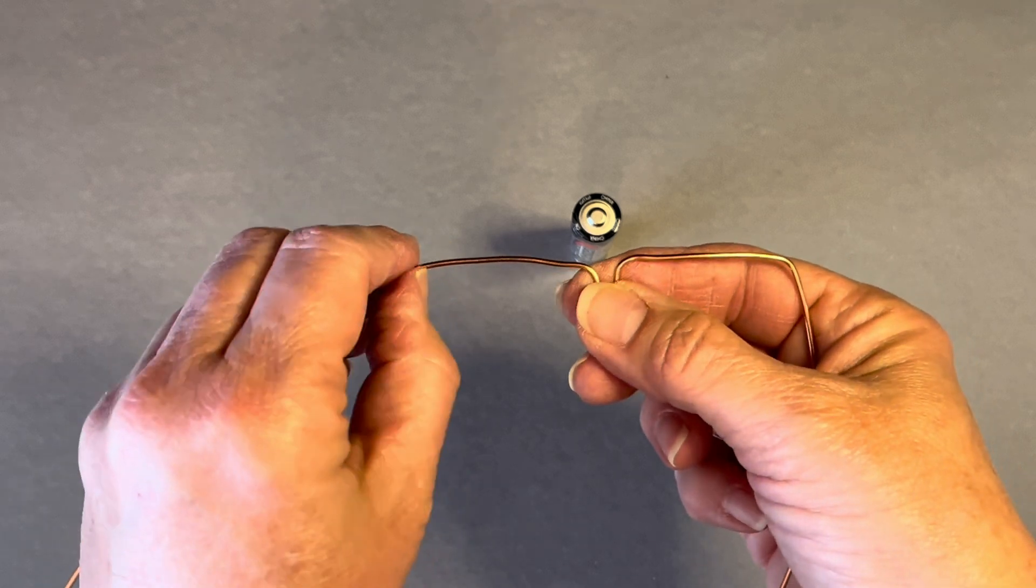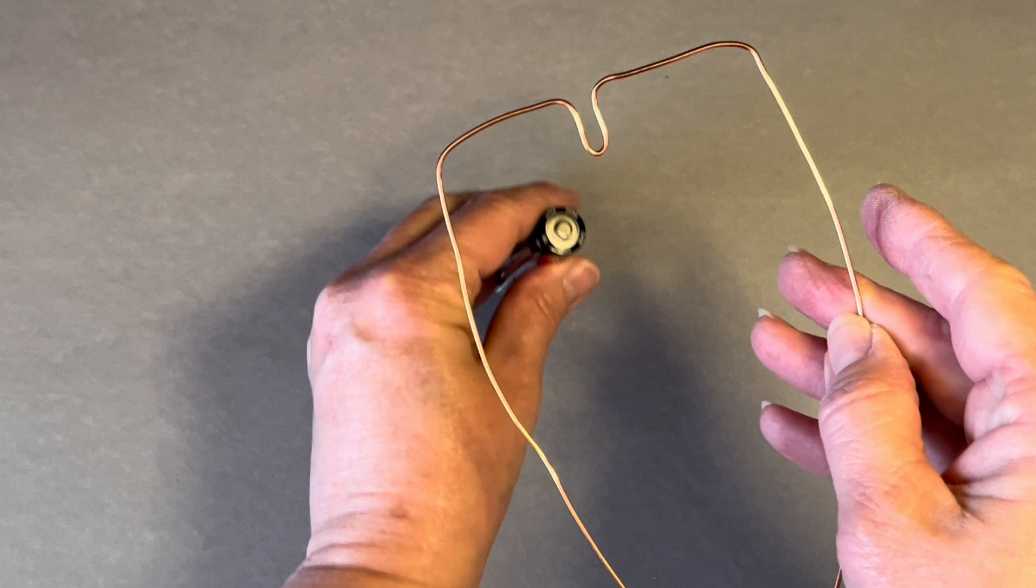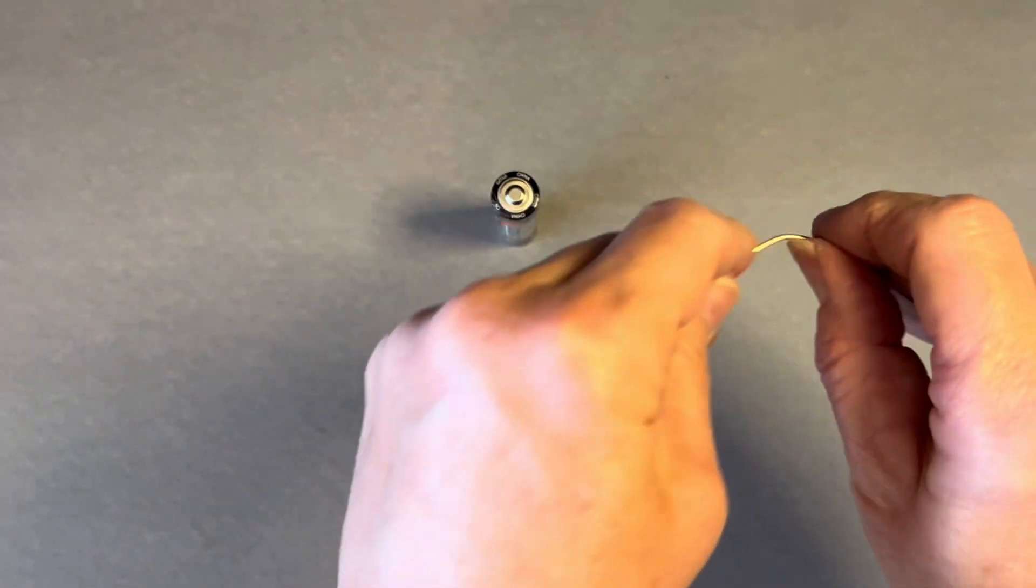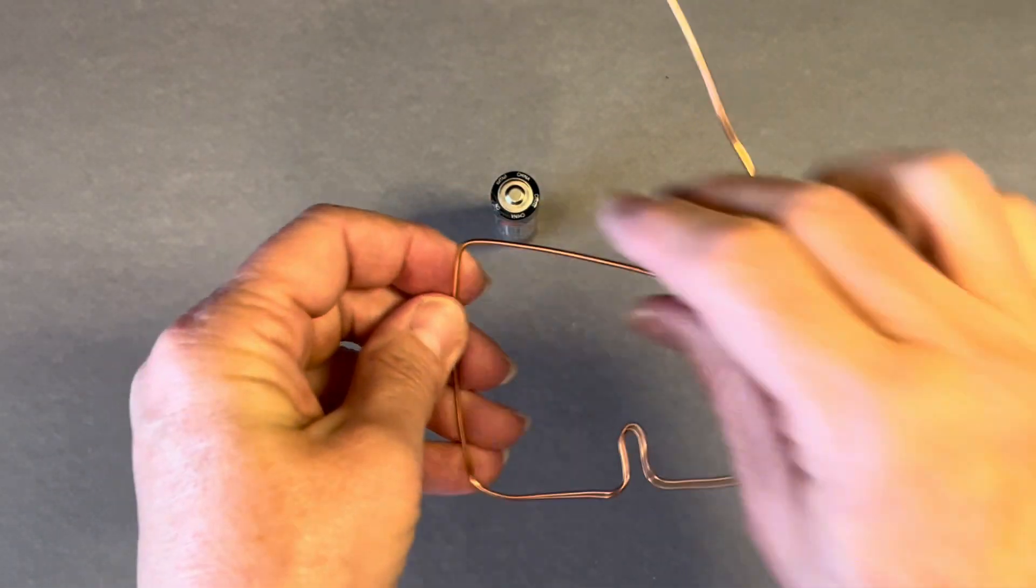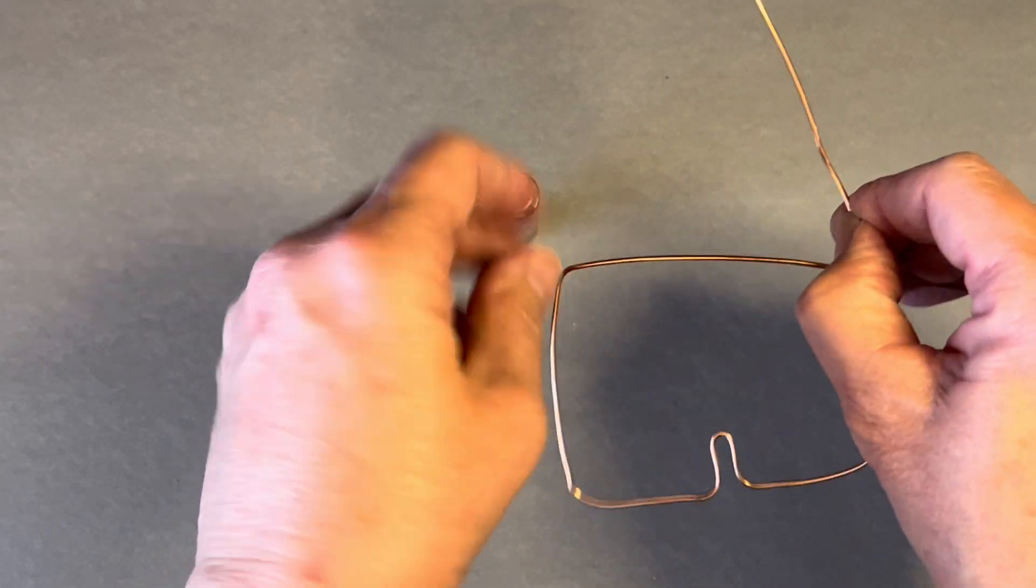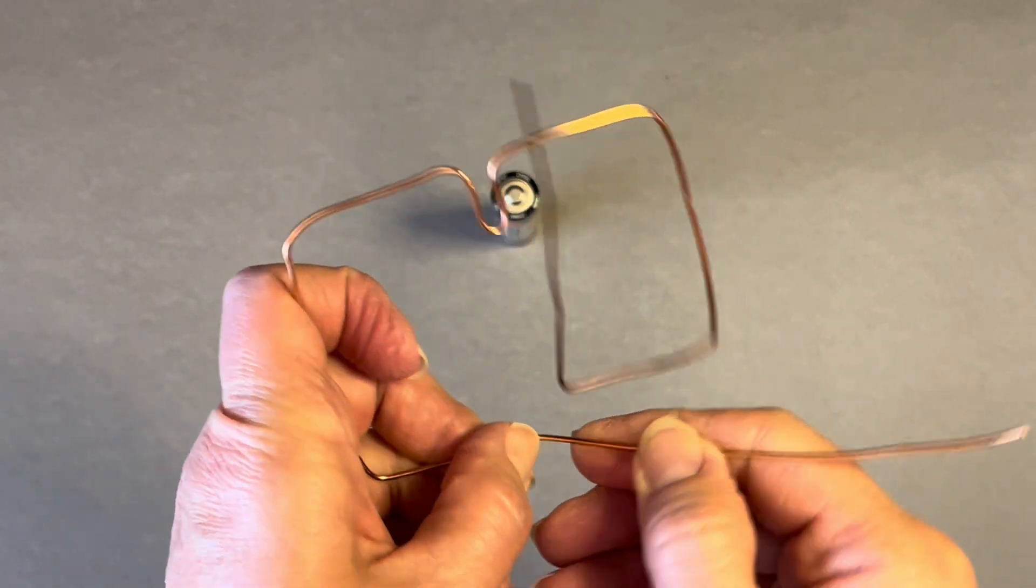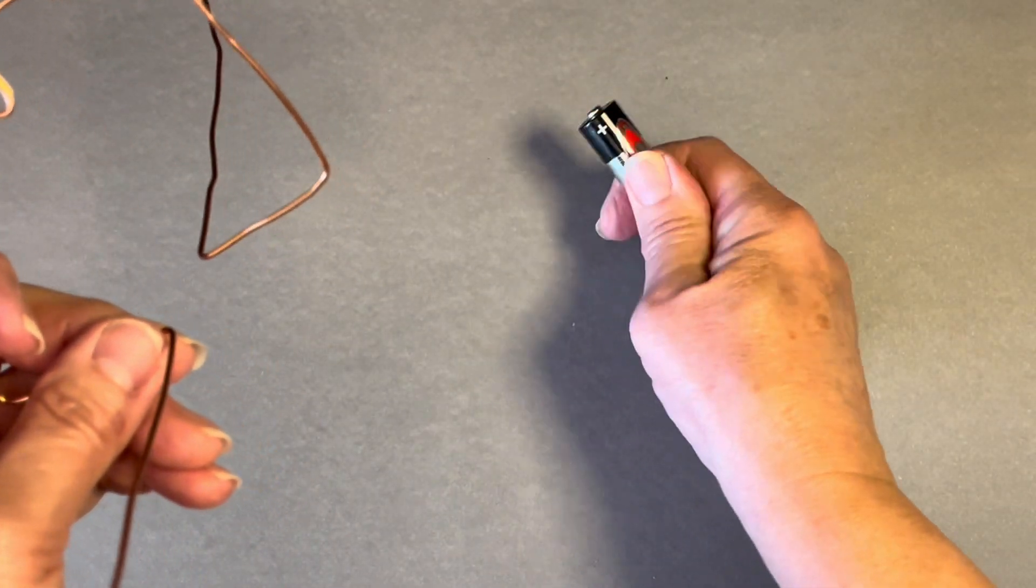I decided to go with a square as a simple homopolar motor to start with. I know it looks simple but it did take a lot of adjustments in order for it to touch those key points and have balance on top of the battery.